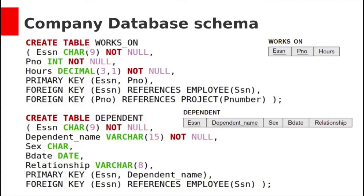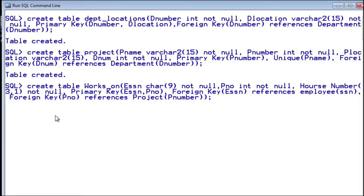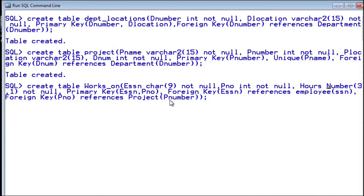Let's create the works-on table, which has three columns: ESSN, pNumber, and the relationship attribute hours (Rs). ESSN is of type character, not null. pNumber is of type integer, not null. Hours is decimal not null. The primary key here is a composite primary key of ESSN and pNumber. We add the primary key constraint on ESSN and pNumber. Foreign key ESSN references employee(SSN). Foreign key pNumber references project(pNumber). We can use decimal or number type — here I am using number. Table created.